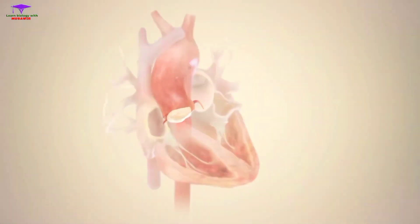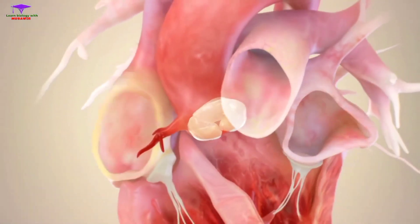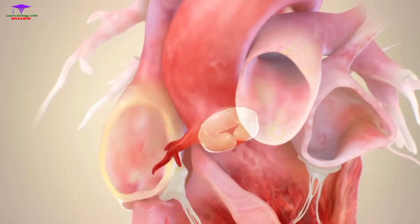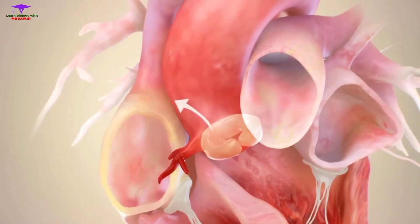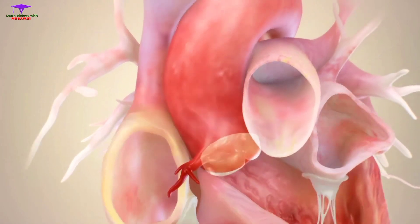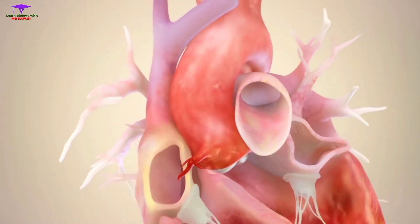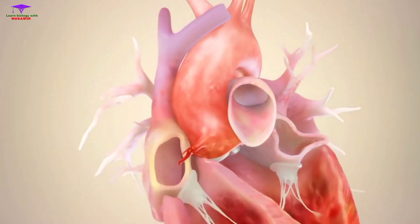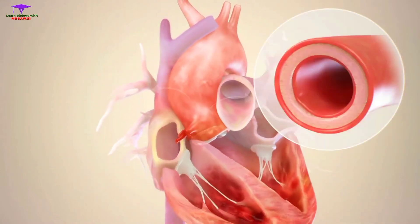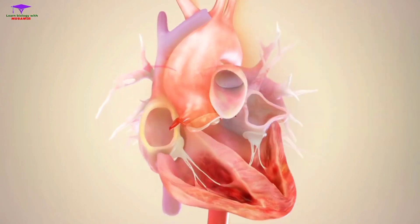The fusion causes one cusp to be larger than the other, and this asymmetry causes a blood flow pattern that puts more pressure on the aorta wall. The increased pressure on the aorta may be correlated with aortic dilation, tearing, or aneurysm.